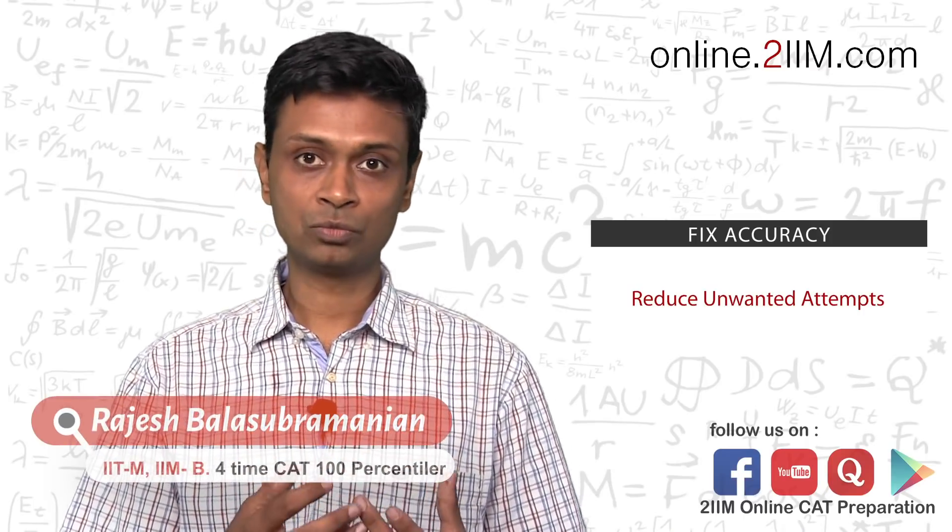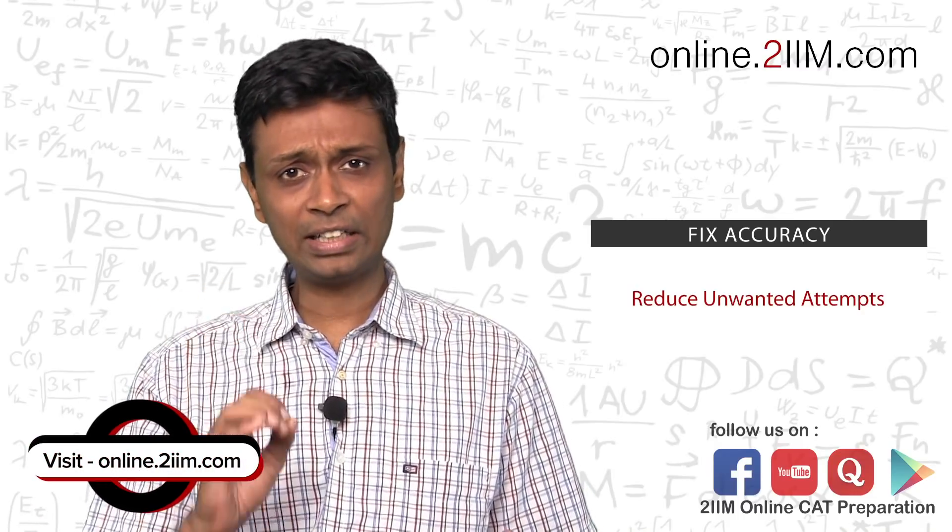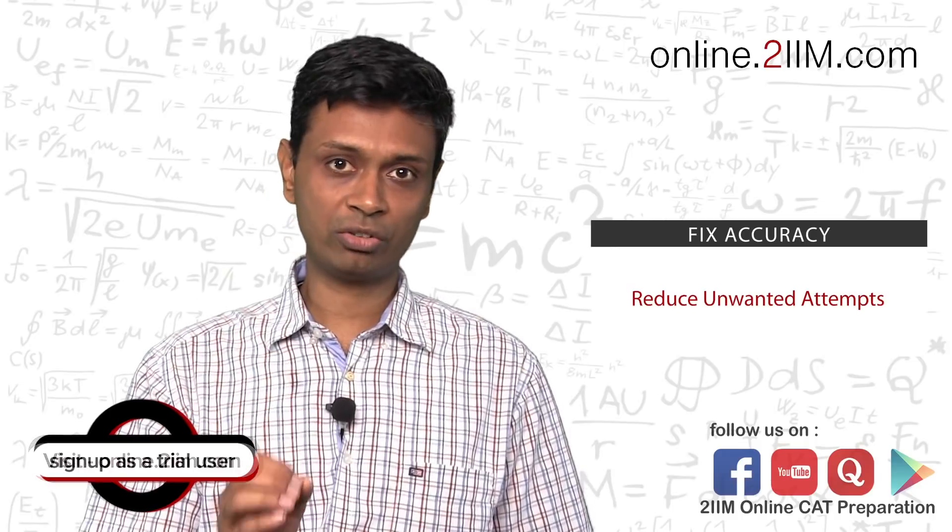That means you have no control over a paper. As a simple rule of thumb, your accuracy should be upwards of 90-95% in quant and DI, and upwards of 75% in verbal. If your accuracy is 70% in quant and DI and 50% in verbal, then you're in the middle of nowhere. You've got to seriously improve that accuracy. Be very particular about accuracy.